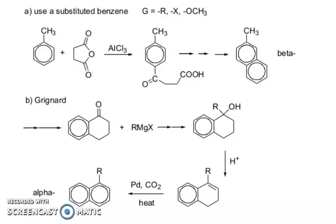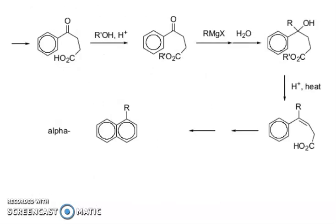Substituted naphthalene via Haworth synthesis: starting from phthalene anhydride, forming these products. Using Grignard reagents, you can see the formation of the naphthalene ring through this route.